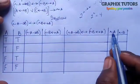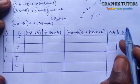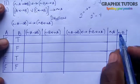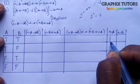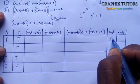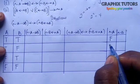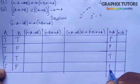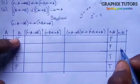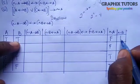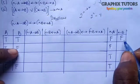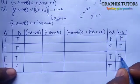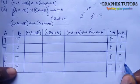Negation means the direct opposite of what a statement's truth value is. So if A is true, negation A is false; if A is false, negation A is true. The same applies to negation B.